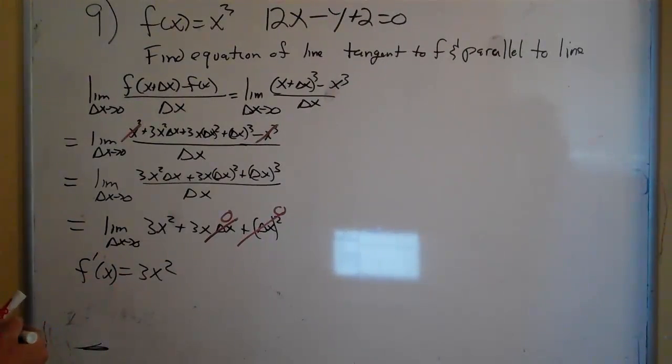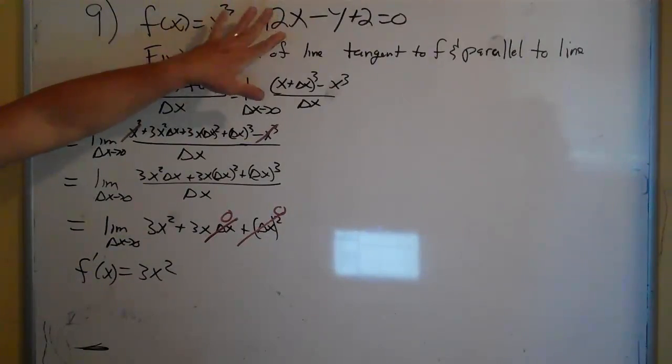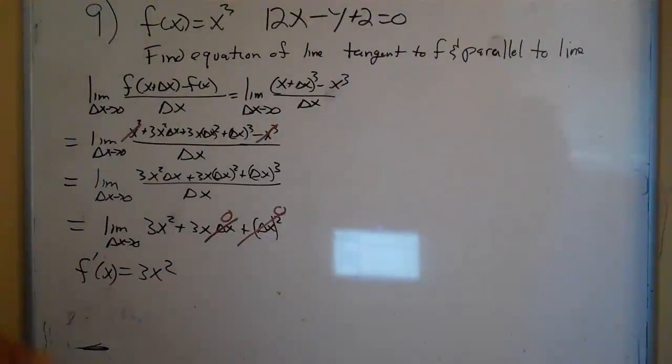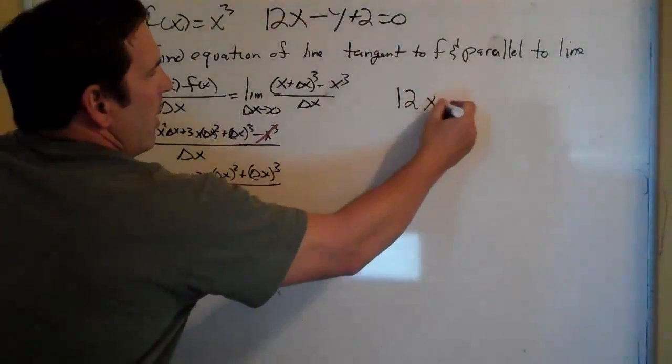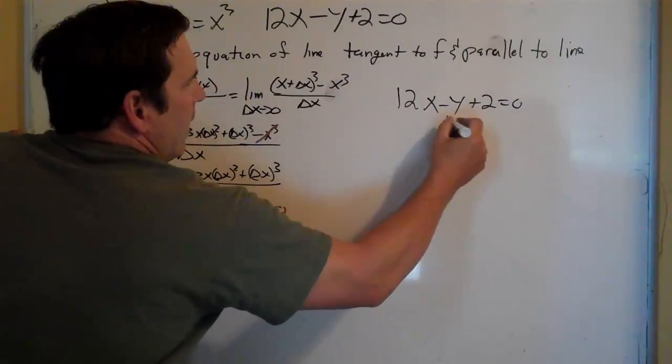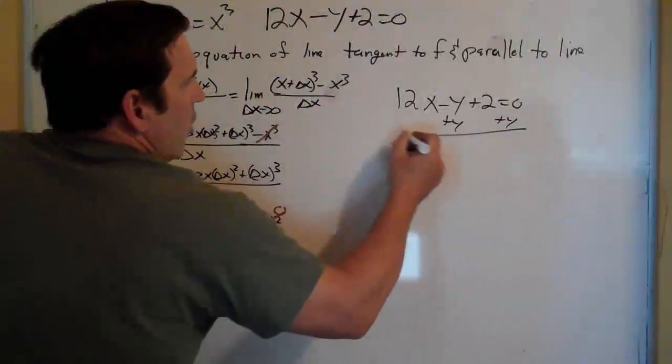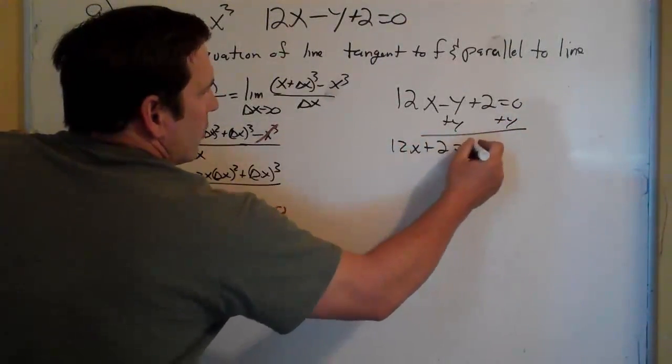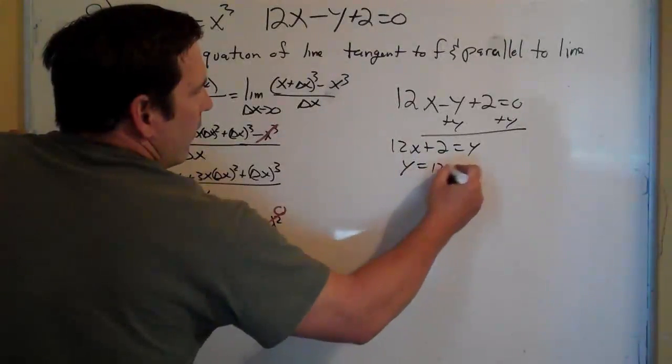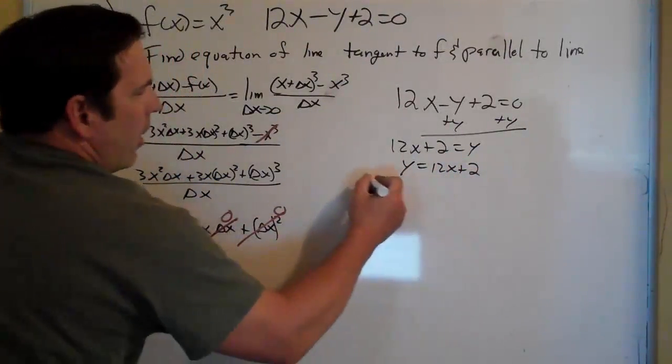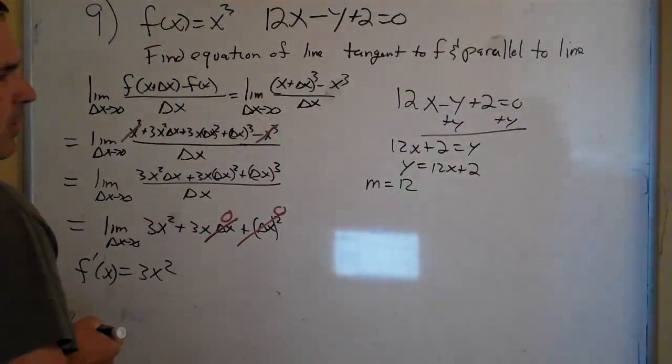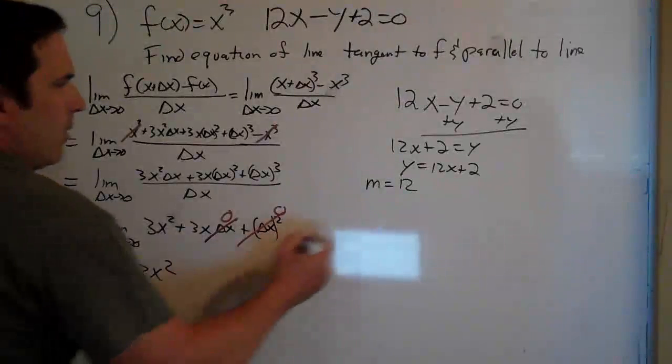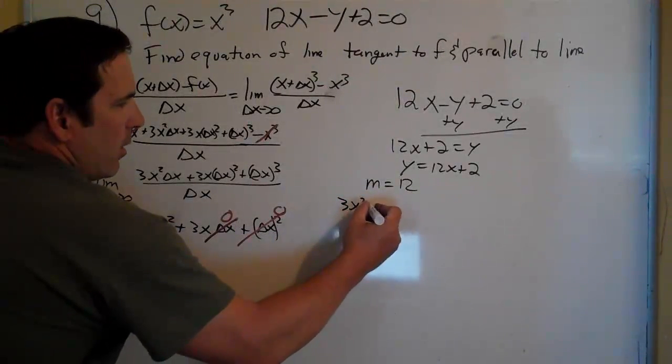So with that in mind, we are going to try to find the equation of the line that's going to be parallel to this. So first, it would be helpful if we had this 12x minus y plus 2 equals 0. If we add y to both sides, we have 12x plus 2 equals y, or y equals 12x plus 2. Our slope here, which everyone should know by now, is that 12, the coefficient for the x. So we want to find out where 3x squared is going to be 12.